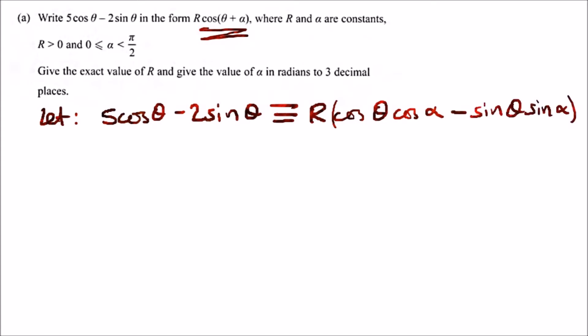In terms of cos θ, we can say 5 cos θ equals r cos θ cos α. Canceling the cos θ gives us r cos α = 5.